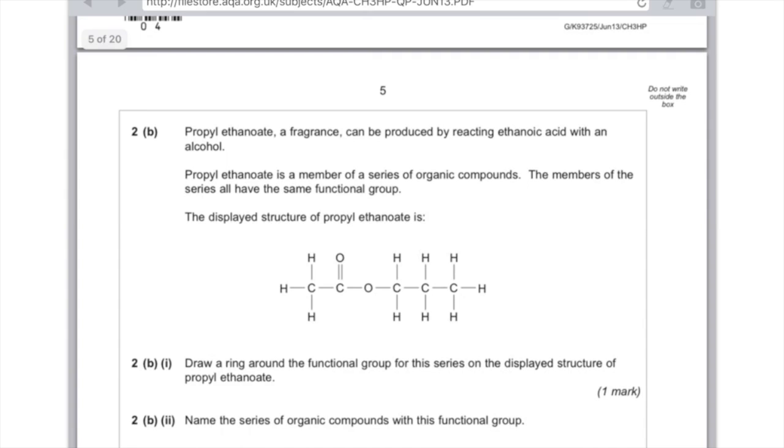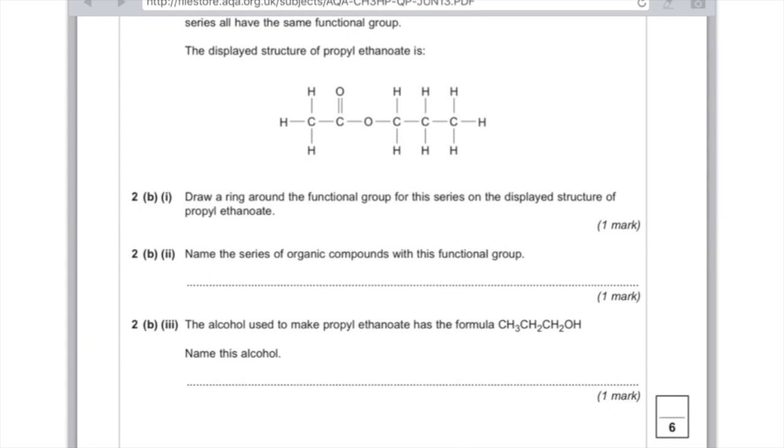2B. Propyl ethanoate, a fragrance, can be produced by reacting ethanoic acid with an alcohol. Propyl ethanoate is a member of a series of organic compounds. The members of the series all have the same functional group. The displayed structure of propyl ethanoate is. Draw a ring around the functional group for this series on the displayed structure of propyl ethanoate. So remember the functional group of an ester is COO, so you need to draw a ring around there. Now it's asking for us to name the series of organic compounds with this functional group. And the answer here is ester.